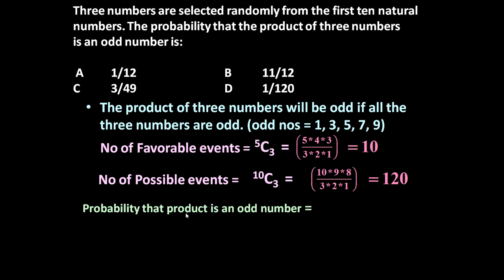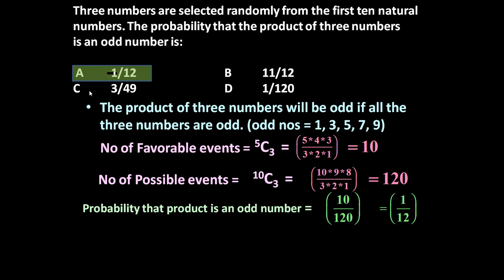So the required probability that the product is an odd number is given by 10/120 = 1/12. So the answer is A: 1/12.